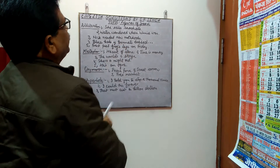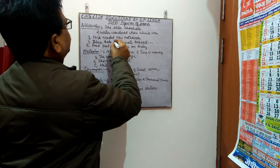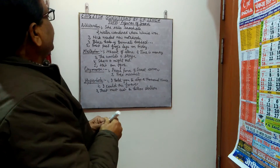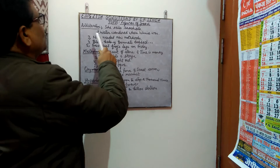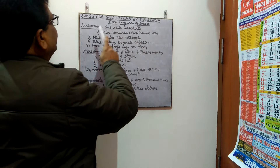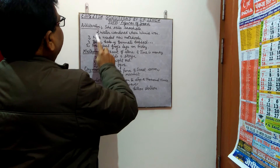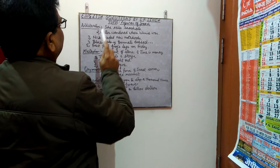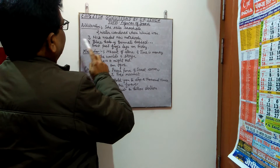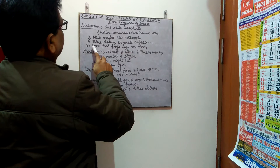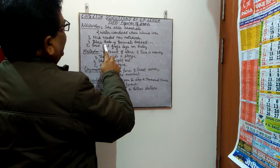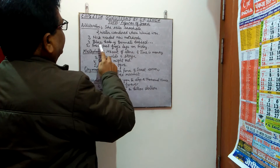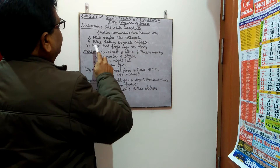Next example: 'Blue baby bonnets bobbled.' Here you will find the repetition of the B sound, and in the previous sentence the repetition of the N sound. One more example: 'Fred fried frogs' legs on Friday.' In this sentence you will find the repetition of the F sound.